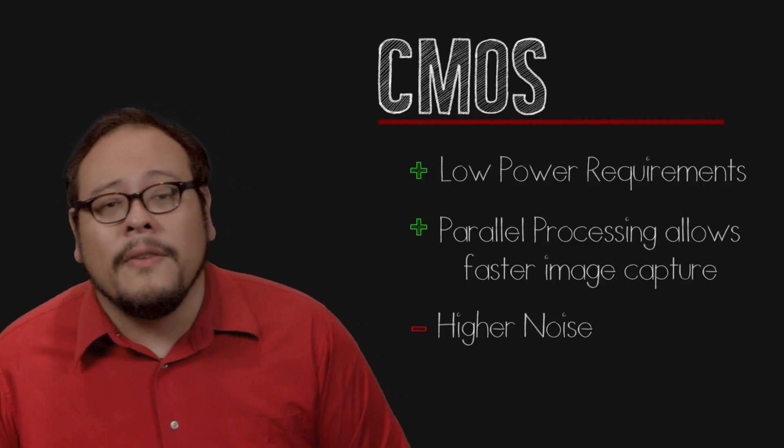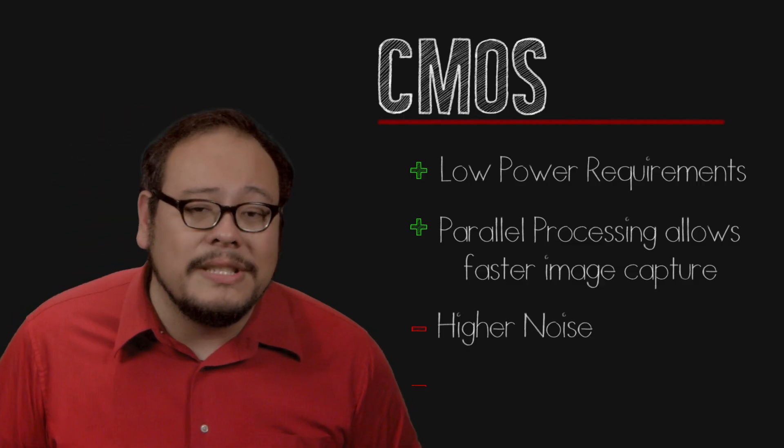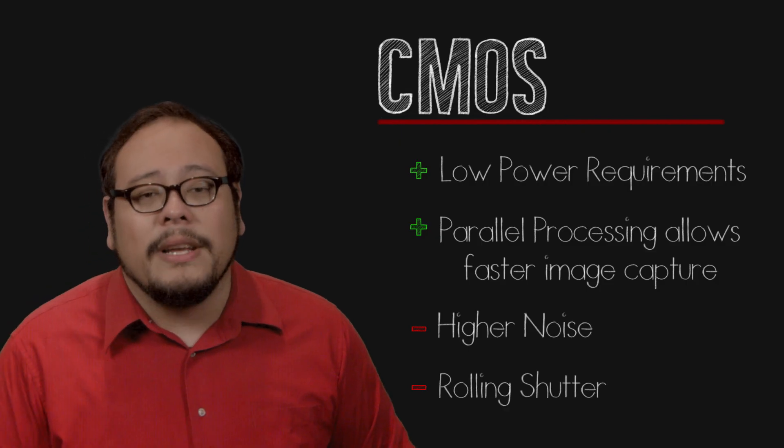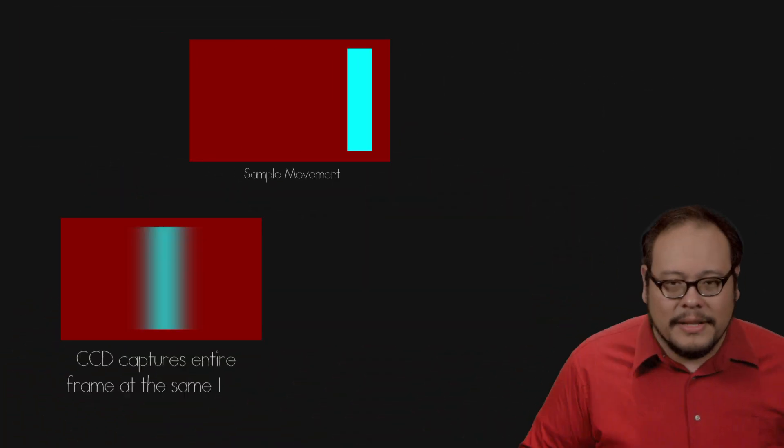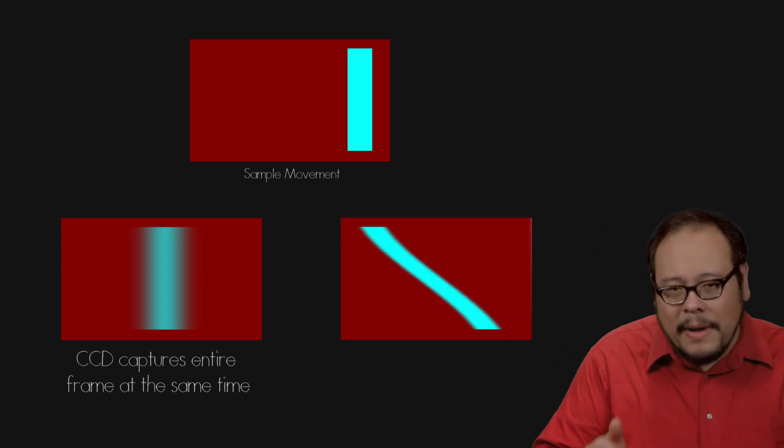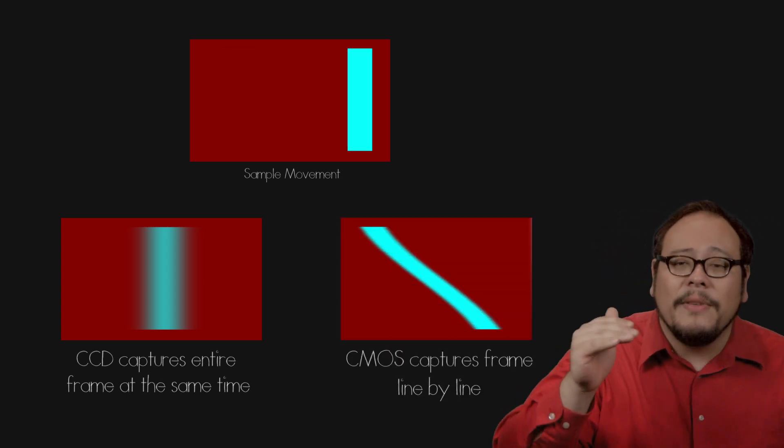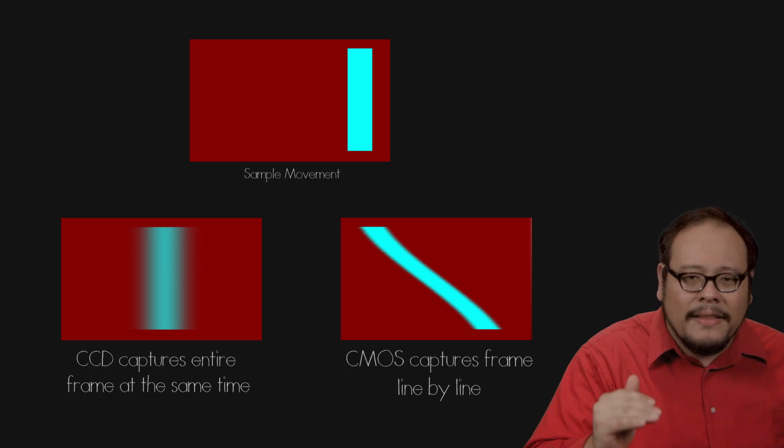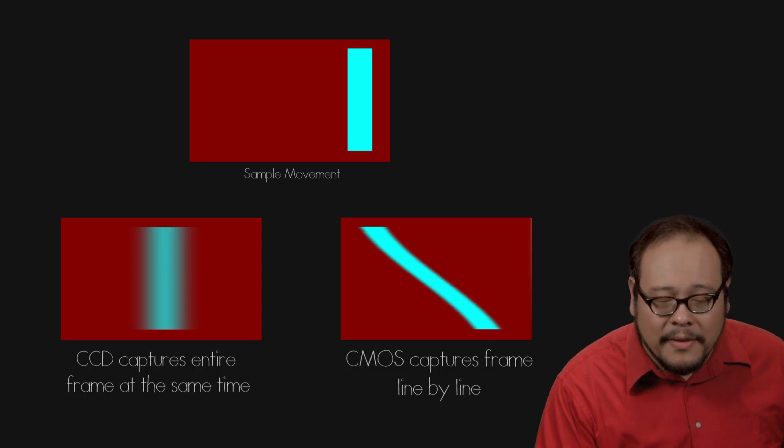Also there is a common motion artifact that plagues practically all CMOS sensors, rolling shutter. In a CCD, image is recorded in a single instant. A CMOS sensor records data line by line so the information collected at the top of the frame is slightly ahead of time from the information collected at the bottom of the frame.